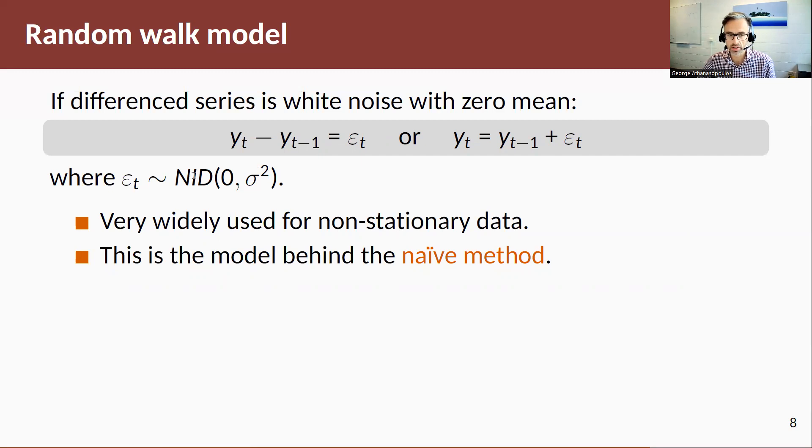This type of model is very widely used for non-stationary data, and this is the model behind the naive method. You can easily show that, assuming our sample goes from t equals one to capital T, the expected value of a future value of this random variable yt plus one conditional on what we've observed is equal to yt, this is the last observation, plus the expected value of the random error at time t plus one which is equal to zero.